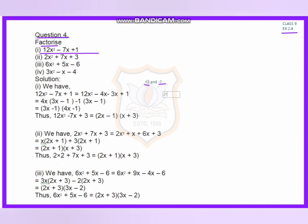First I considered 2 and 6, which gives multiplication equal to 12, but by addition or subtraction I cannot get minus 7. So I selected minus 3 and minus 4: multiplication of minus 3 and minus 4 gives 12, and their addition gives minus 7.